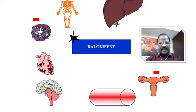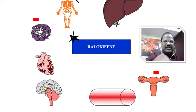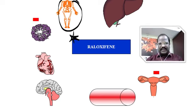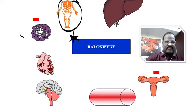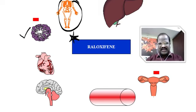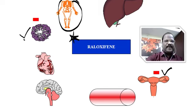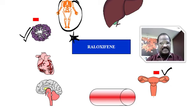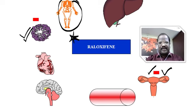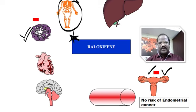Raloxifene, a SERM, was actually introduced for prevention of osteoporosis. Raloxifene has antagonistic action on breast estrogen receptors as well as antagonistic action on endometrial estrogen receptors. In other areas it acts as an agonist. So raloxifene is also useful for treatment of ER-positive breast cancer, and with the advantage of no risk of endometrial cancer compared to tamoxifen.